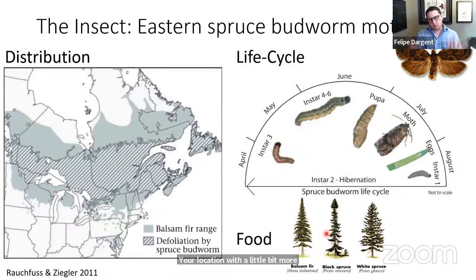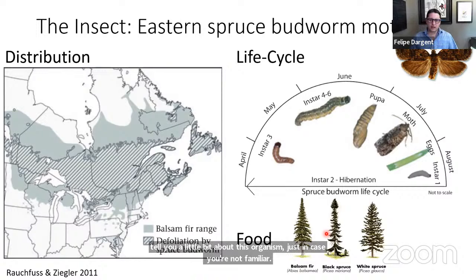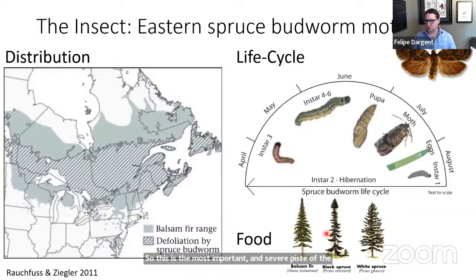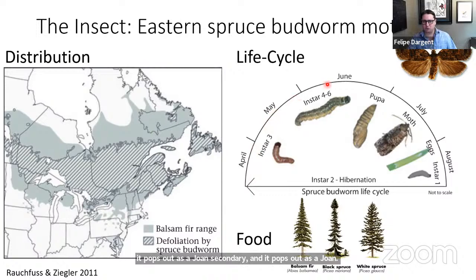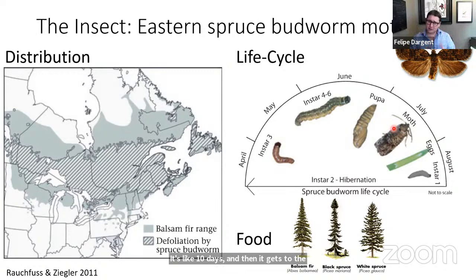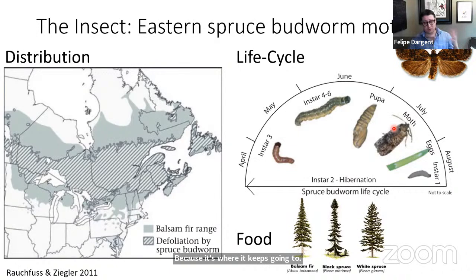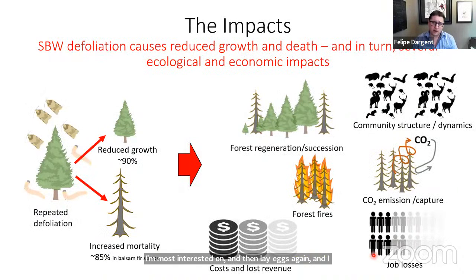Let me tell you a bit about this organism. The spruce budworm is the most important and severe pest of the boreal forest. It feeds on balsam fir and spruces and has a fascinating life cycle. It spends most of its time as a second instar, hibernating. Then it pops out as a young second instar, starts feeding, and grows massively until it reaches the pupa stage, which is short-lived at about 10 days.